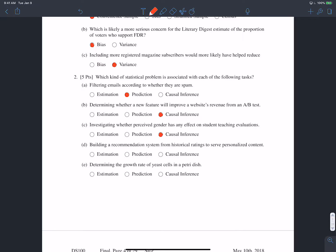Building a recommendation system from historical ratings to serve personalized content. So the sort of model that Netflix and Yelp, those kinds of things use, that's also prediction. We take some data set that we already have, build a model on it and try and predict the ratings that people will give to these new TV shows or movies.